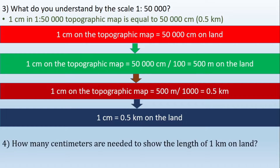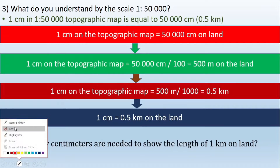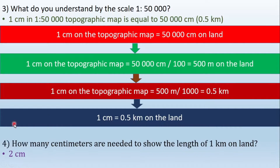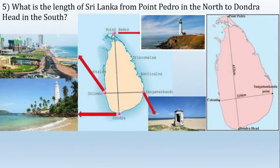How many centimeters are needed to show the length of one kilometer on land? We need two centimeters. According to this scale, 1 cm represents 0.5 km on the land. Therefore, 1 kilometer means you need 2 centimeters. If you take a line segment of 2 centimeters on a 1:50,000 topographic map, it already represents 1 kilometer on the land.